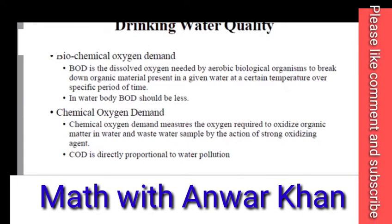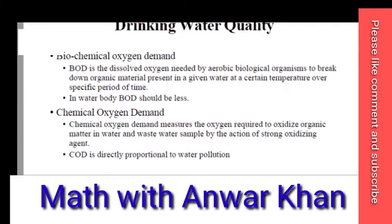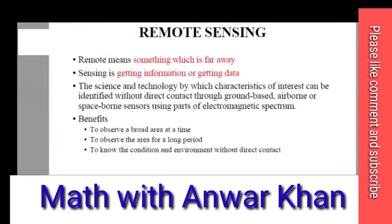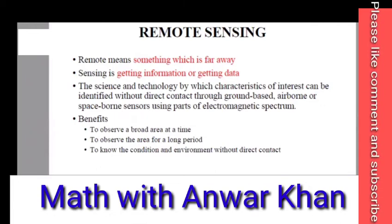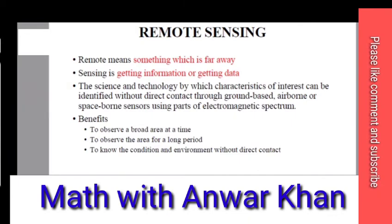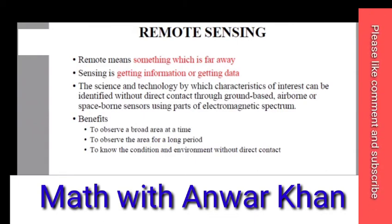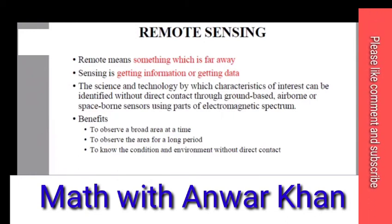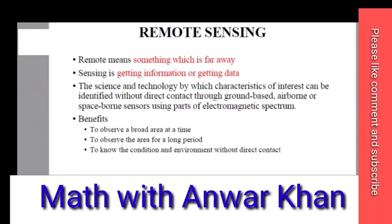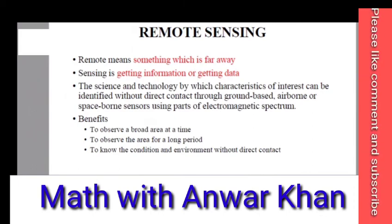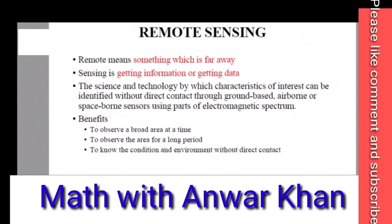Biochemical oxygen demand is the next topic. Then there is remote sensing — remote sensing is when something is far away and you collect information and data from a distance without direct contact. Remote sensing is the science and technology by which characteristics of interest can be identified without direct contact, through ground-based, air, and space-borne sensors, using the electromagnetic spectrum. Using the electromagnetic spectrum and remote sensors, you can take information about the land and ground.